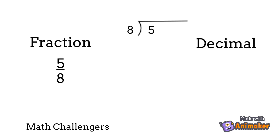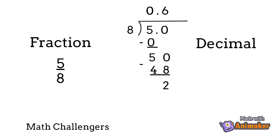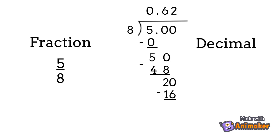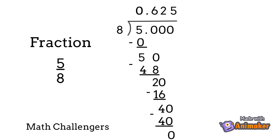To do that, we have to add a decimal point in the dividend, and zeros if needed. Put the decimal point in the quotient directly above the decimal point in the dividend, then divide like whole numbers. The fraction 5 eighths is equal to 0.625 in decimal.